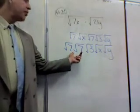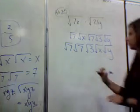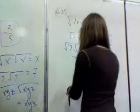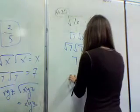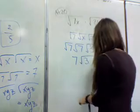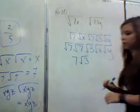So root 7 times root 7 equals what? 7. According to what we know, it's equal to 7. So 7 root 3. Root 3 cannot be simplified. Anybody know why? Is there a perfect square that divides into it? No. So that's it. Root 3.